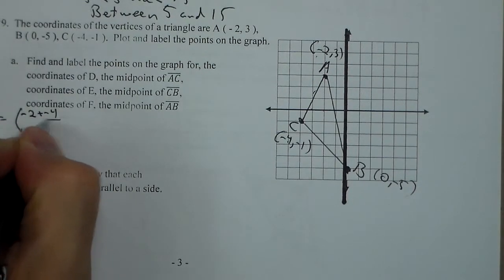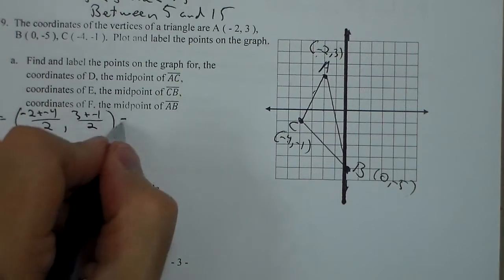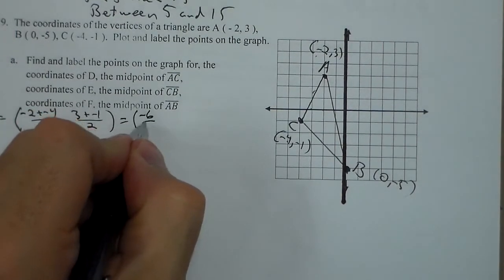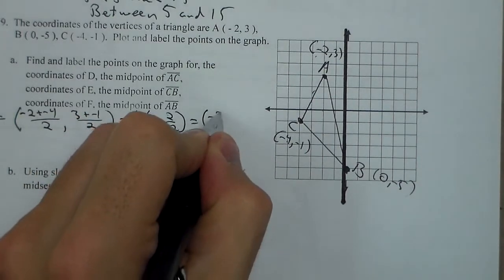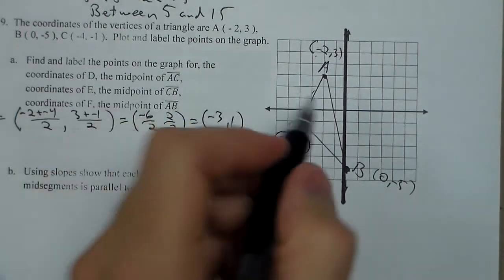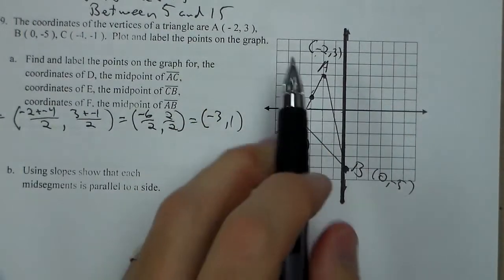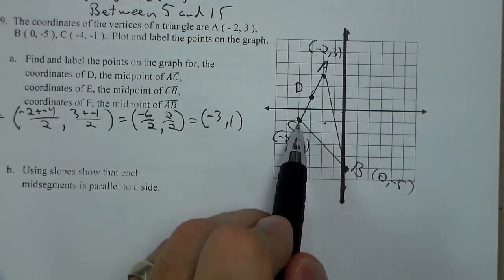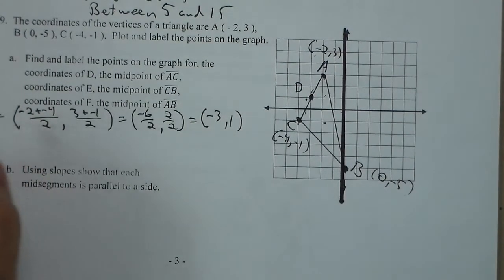So this becomes negative 6 over 2, and 2 over 2, or negative 3, 1. Which if we check, is that point D right here. It's halfway between the two. If I went down 4 to the left, I do half, down 2, 1 to the left. So that's D.